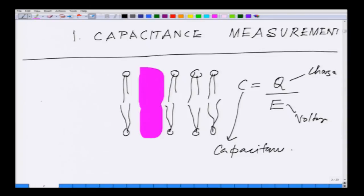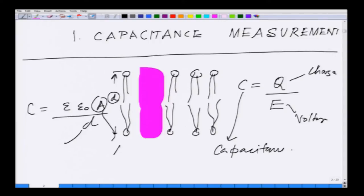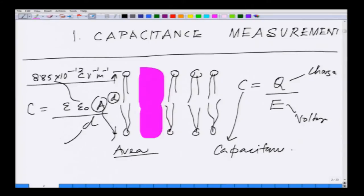Further, you can derive capacitance as epsilon-zero times A over D, where D is the thickness of the membrane, A is the area of the whole membrane, and epsilon-zero is the permittivity constant - permittivity of the membrane as well as free space. In free space, epsilon-zero is 8.85 times 10 to the power minus 12. For a parallel plate capacitor, the specific capacitance will be around 1 microfarad per centimeter squared, and for a pure bilayer it is approximately 0.8 microfarad per centimeter squared.